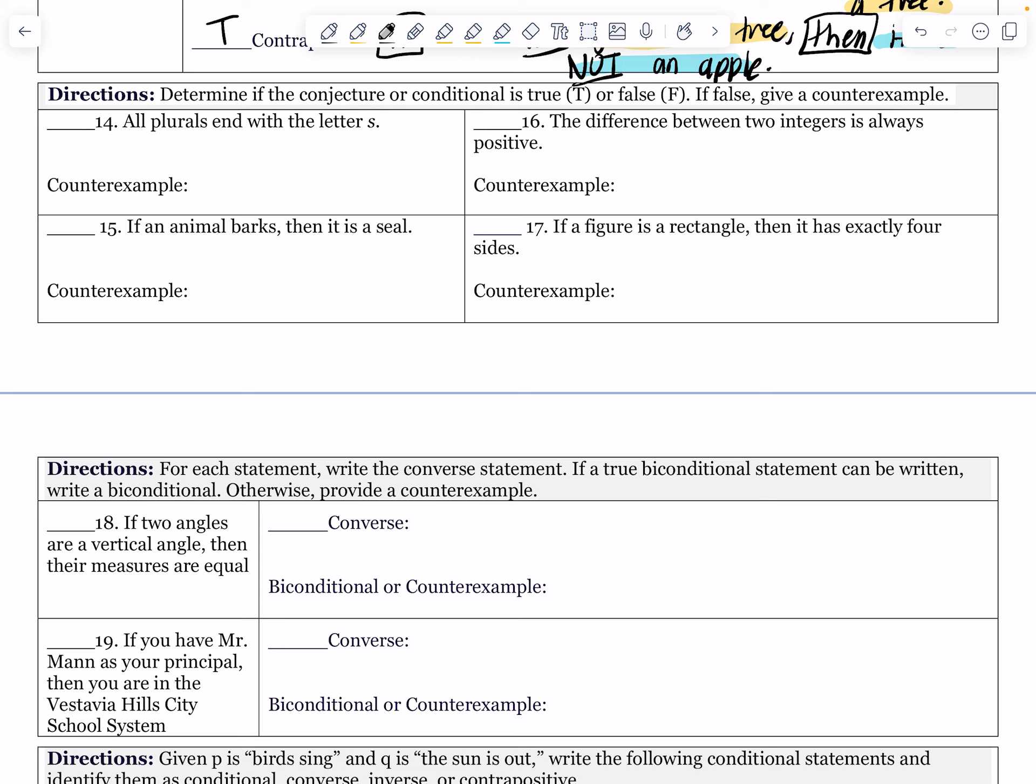The directions say determine if the conjecture (remember, conjecture is just another word for the conclusion) or conditional is true or false. If false, give a counterexample. If anything is true, there's no counterexample that exists. If you put false, you have to provide evidence to discredit the statement.